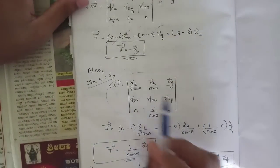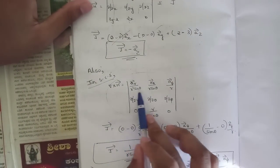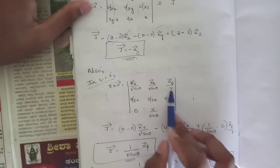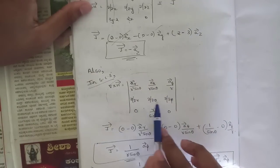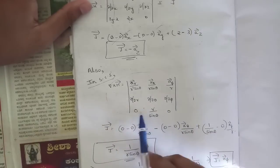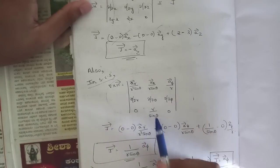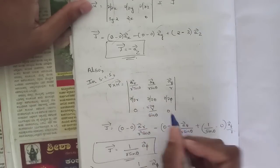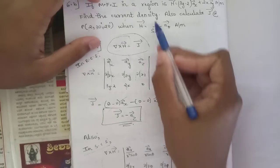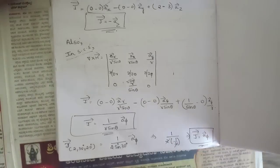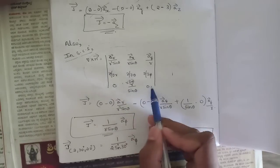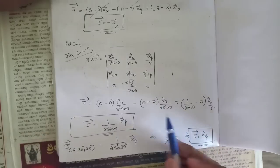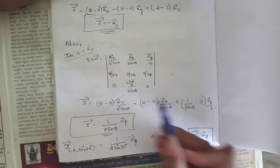In spherical coordinates, ∇×H is a determinant with first row: ar/(r²sinθ), aθ/(r sinθ), aφ/r; second row: ∂/∂r, ∂/∂θ, ∂/∂φ; third row: Hr=0, Hθ·r sinθ = r/sinθ (since H_θ = 1/sinθ, multiplied by r gives r/sinθ), Hφ·r sinθ = 0.